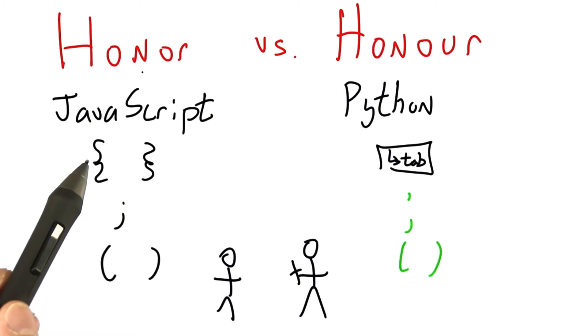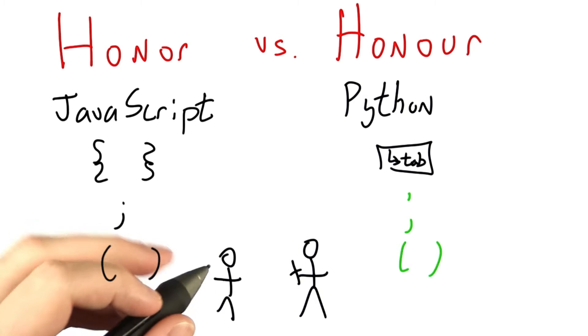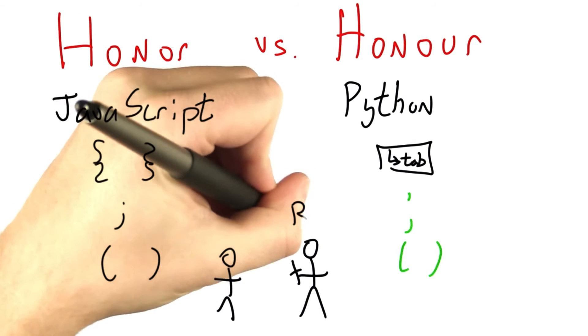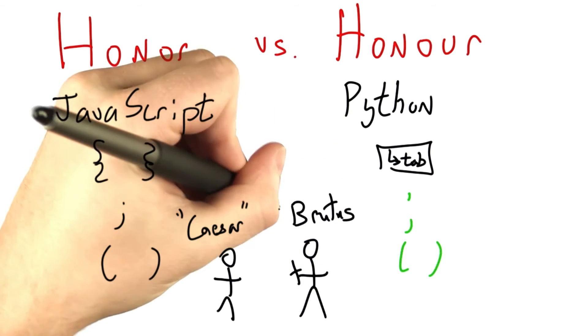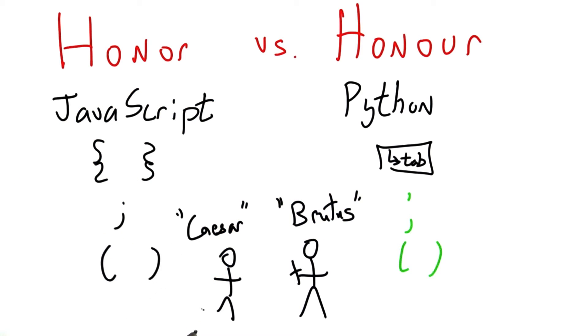And in some sense, preferring one over the other is a bit like preferring Brutus to Caesar. I've heard that Brutus is an honorable man, or at least so Marc Anthony told me. They're both entirely reasonable from our perspective. Is this a dagger I see before me? I guess this one must be Brutus, and this one must be Caesar. And you know which one is which because of these convenient labels.